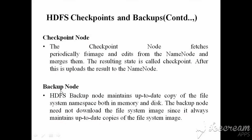The backup node, as the name suggests, is a backup for the name node. The difference between backup node and checkpoint node is: the checkpoint node continuously fetches the FS image and edit log file from the name node, but the backup node does not download any FS image or edit log file from the name node. Instead, it receives details regularly and stores all those details in memory.